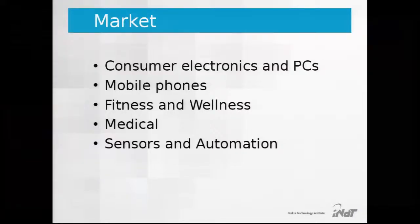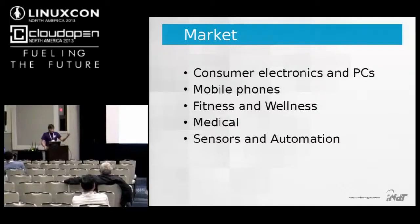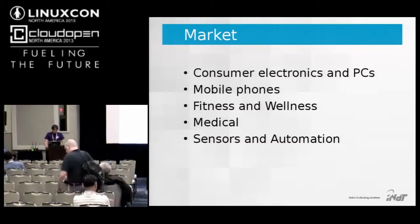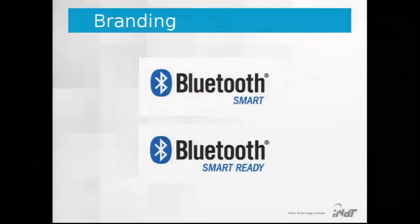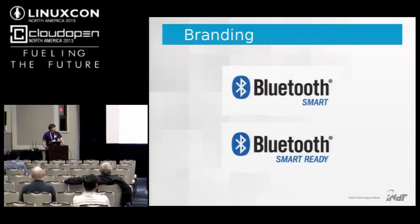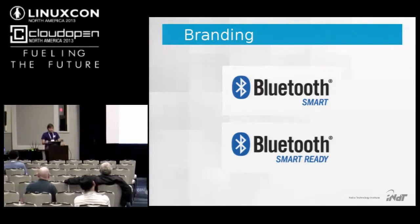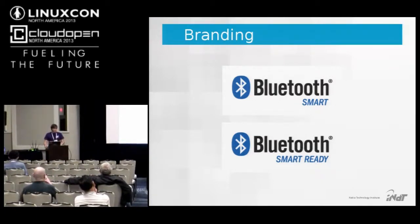The markets Bluetooth Low Energy is mainly aiming to conquer are fitness and wellness, medical devices, and sensors and automation devices — while also expanding into consumer electronics, PCs, and mobile phones. New branding was introduced: 'Bluetooth Smart' refers to peripheral devices using BLE only, and 'Bluetooth Smart Ready' refers to central devices able to talk with Bluetooth Smart devices.